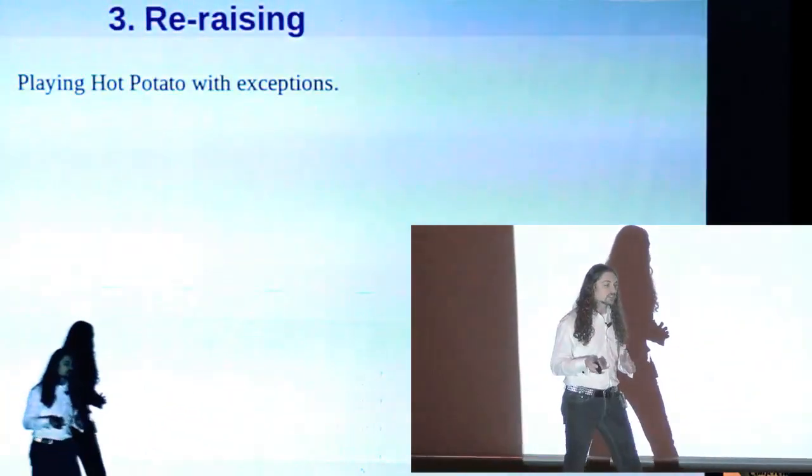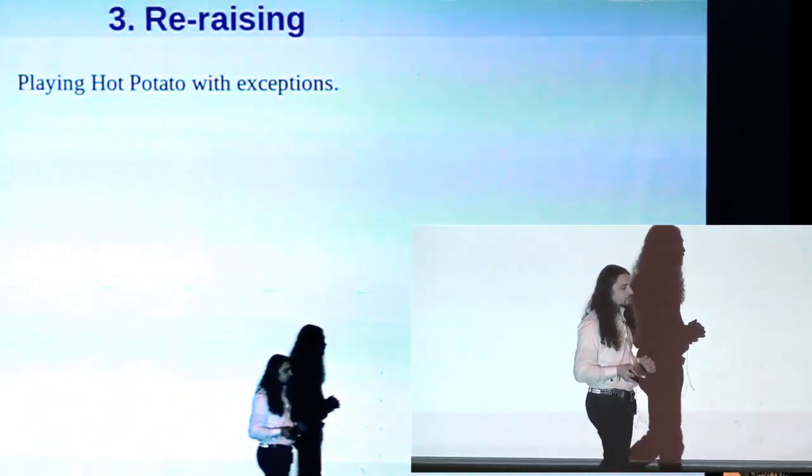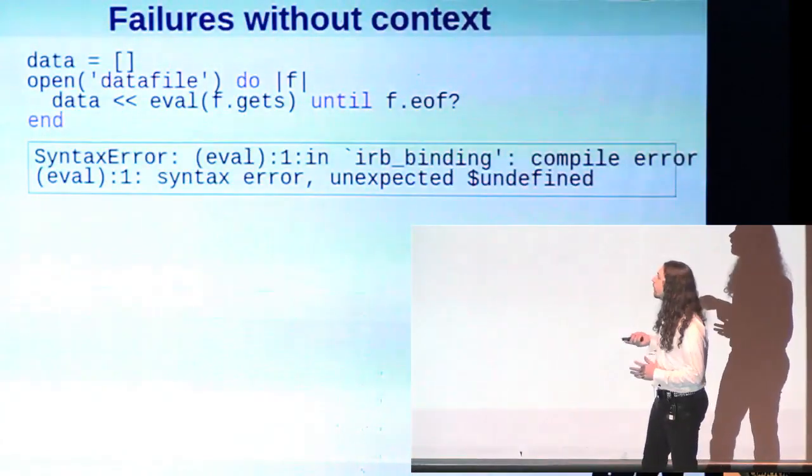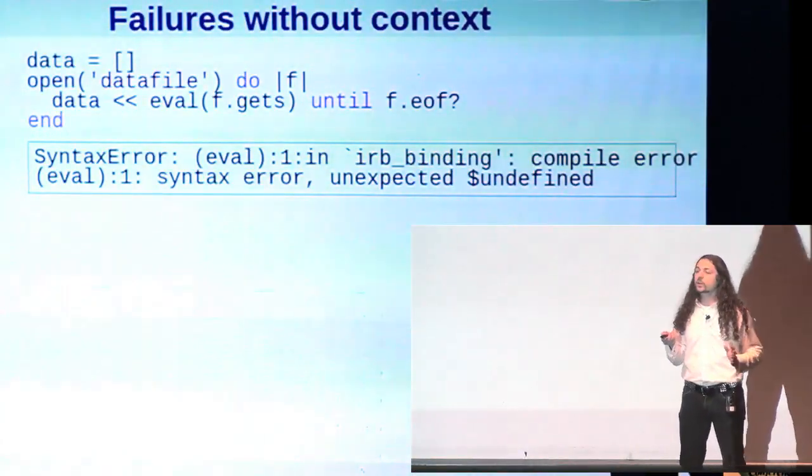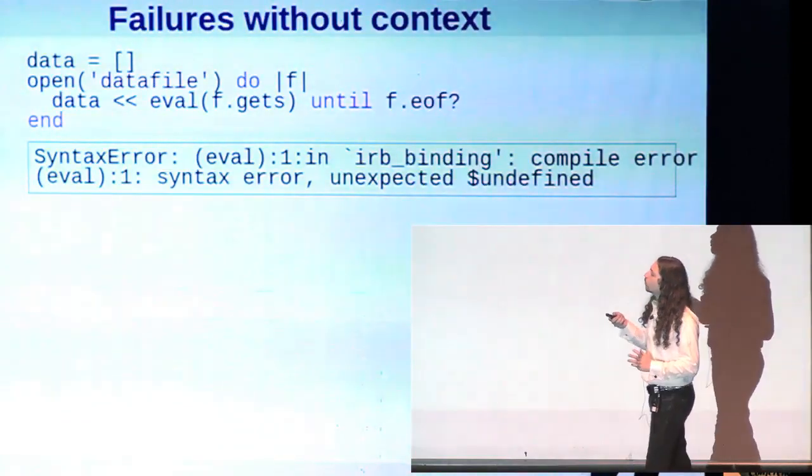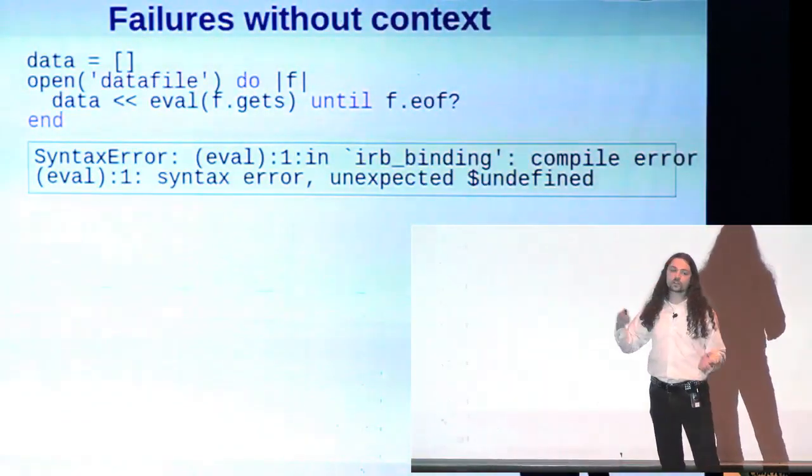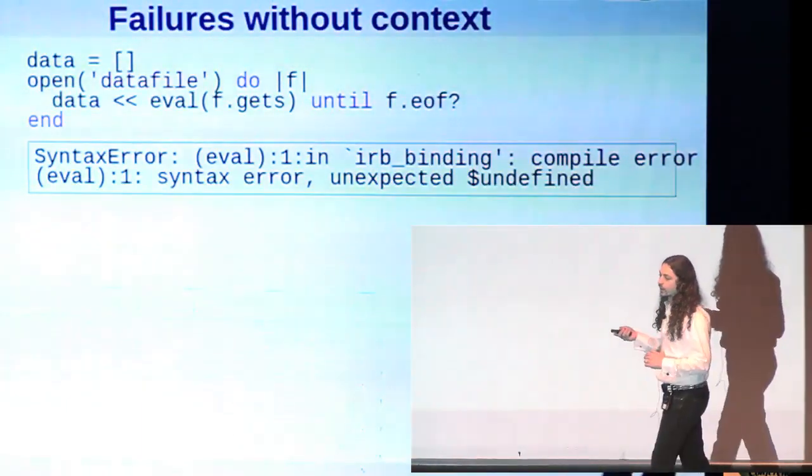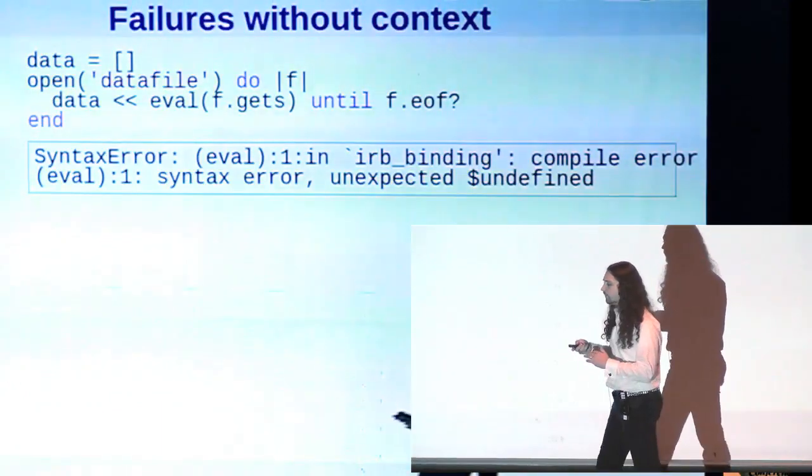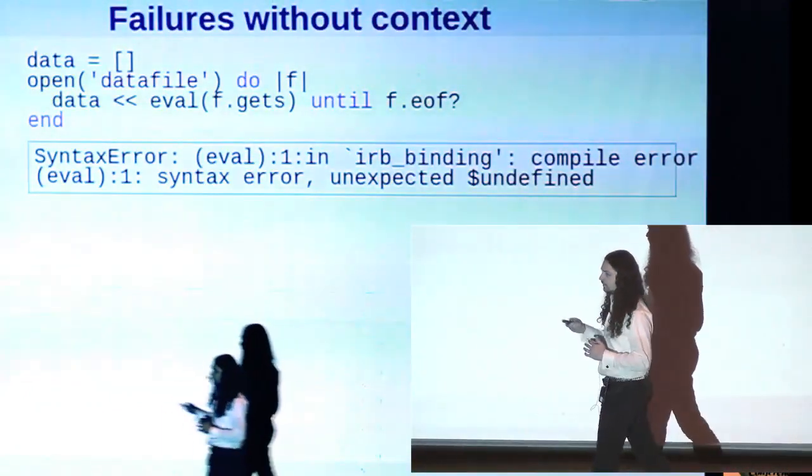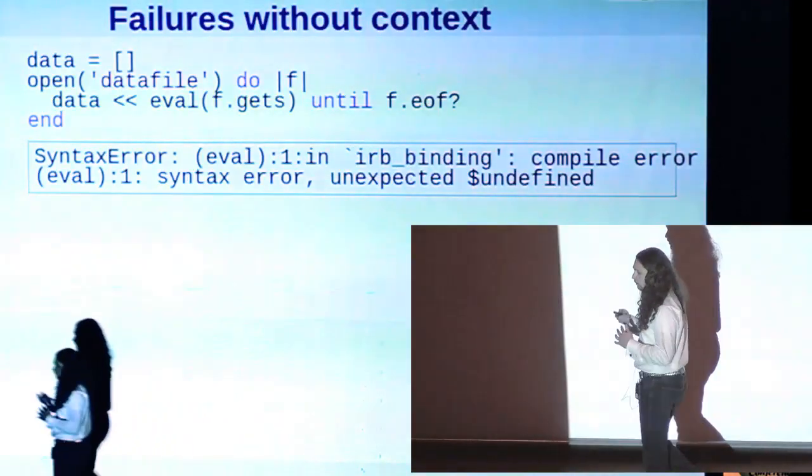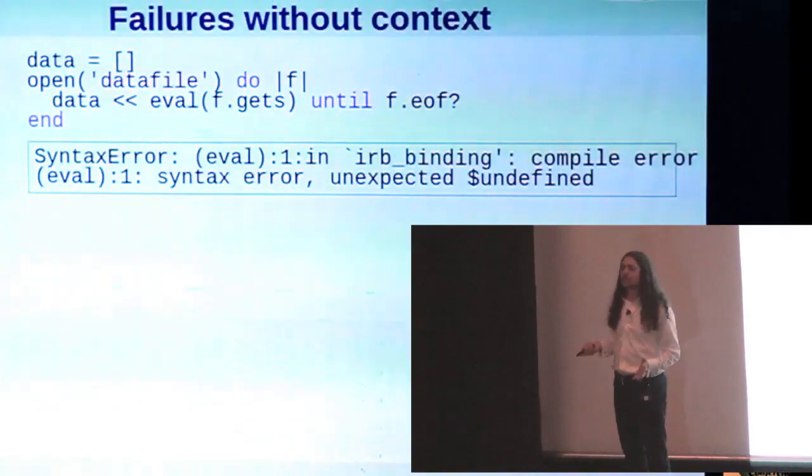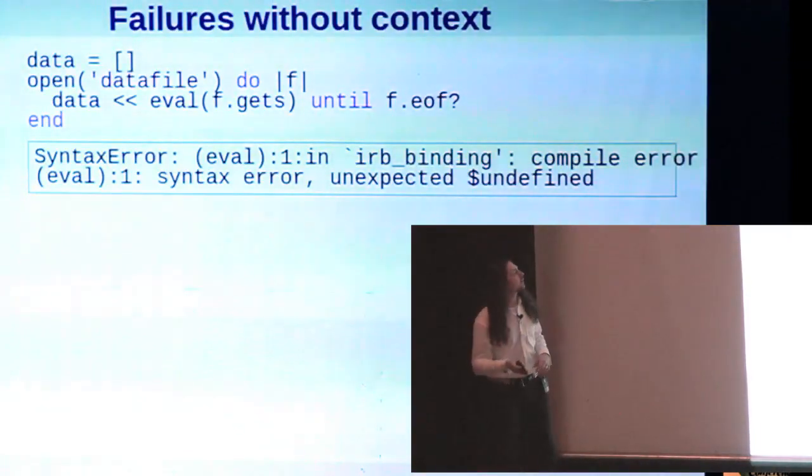Ruby lets us re-raise exceptions if we decide that we can't handle them. But something that's used less often is the ability to modify the exception. So here's a case where we are loading some data up. We're going through a file line by line and we're parsing some data out of it and putting the data in an array. And if that fails somewhere along the line, we get this completely inscrutable exception that if the user sees that, they're like, what? Compile error? What's that about? Where did that come from? Even if they know it was coming from a file, where in the file did it come from?